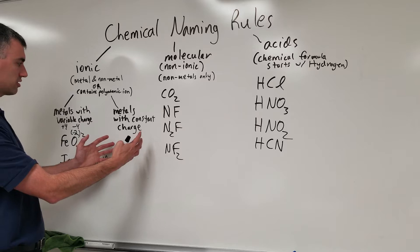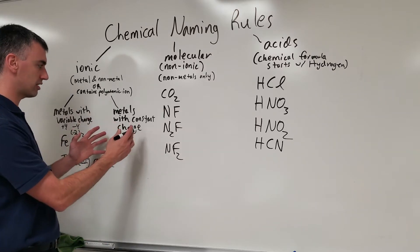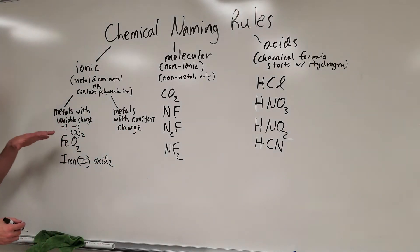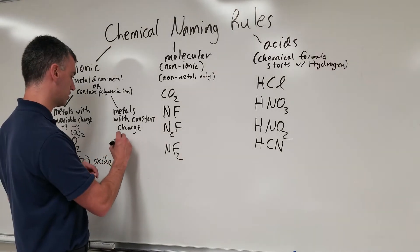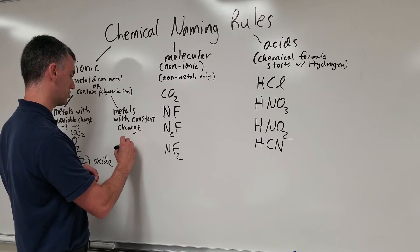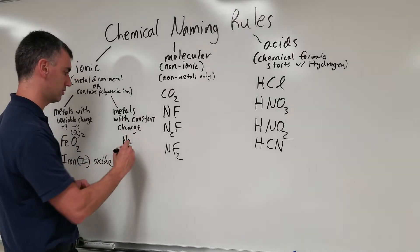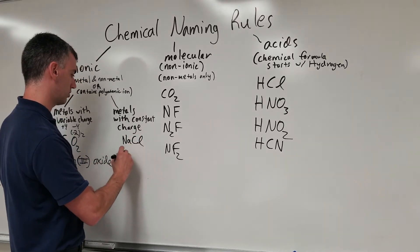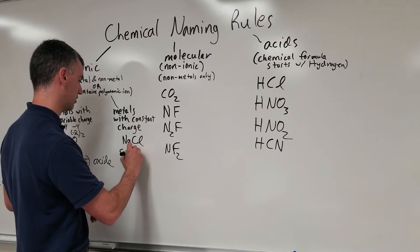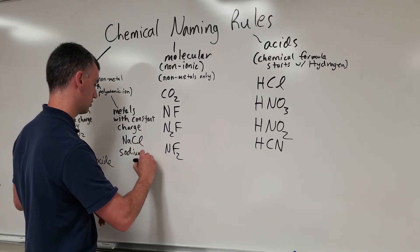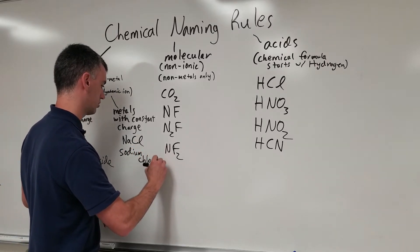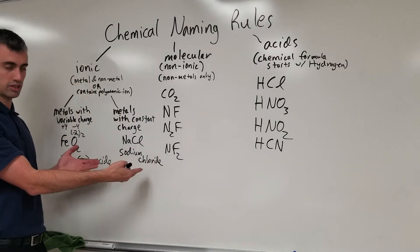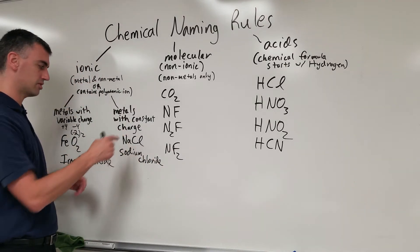That's the summary of that. Metals with constant charge don't need a Roman numeral. Roman numeral is for the metals with variable charge only. This is going to be, for example, sodium, which is an alkali metal. Chloride, that's sodium chloride. No Roman numeral needed, just sodium chloride. You just say exactly what's there, sodium chloride.